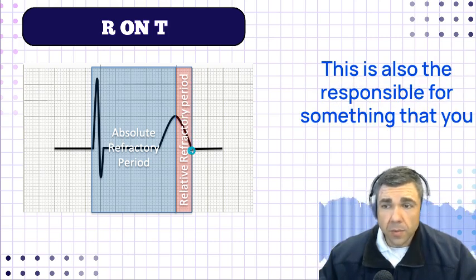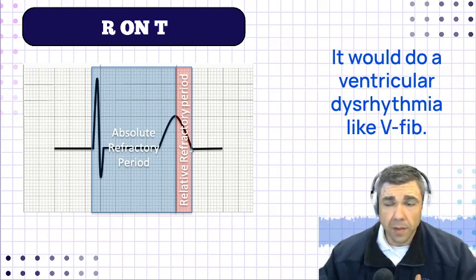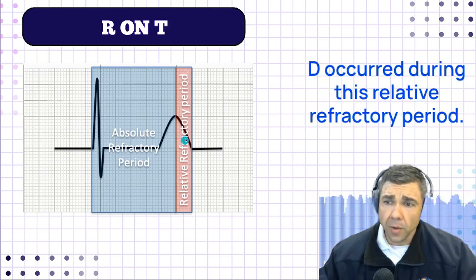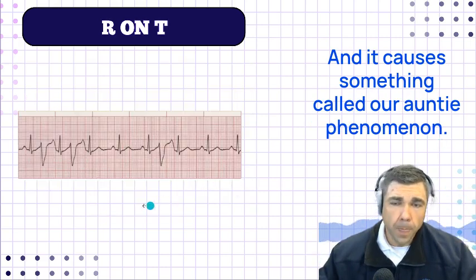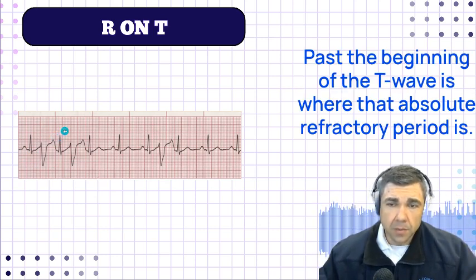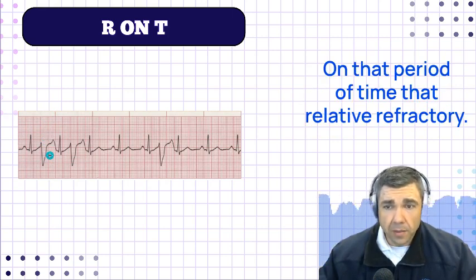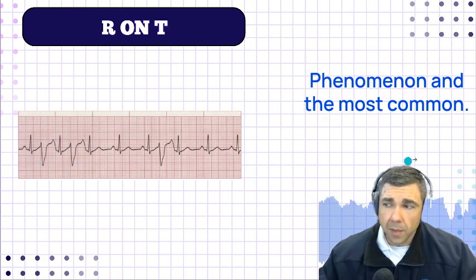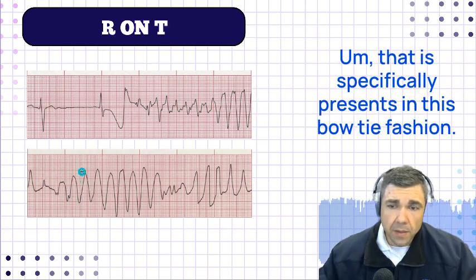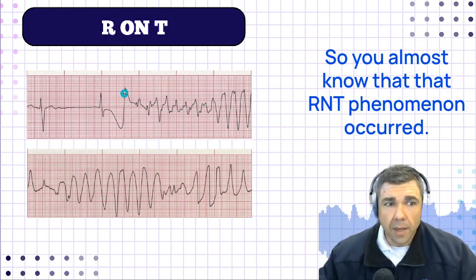The relative refractory period is a very short period of time. It is also responsible for something called commotio cordis, where somebody gets blunt force trauma to the chest and goes into cardiac arrest due to a ventricular dysrhythmia like V-fib. That's because they receive an outside force during this relative refractory period. It causes something called the R on T phenomenon — where a PVC or any sort of depolarization occurs on the T wave during the relative refractory period. The most common arrhythmia to result is torsades de pointes, or 'turning of the points,' a polymorphic ventricular tachycardia presented in a bow-tie fashion that is pathognomonic for a long QT interval and R on T phenomenon.